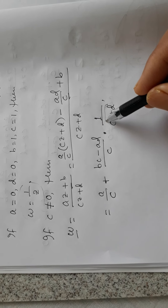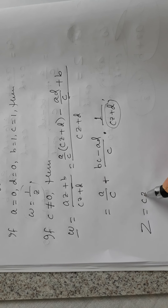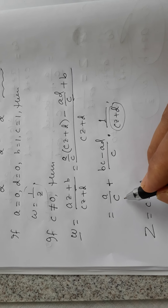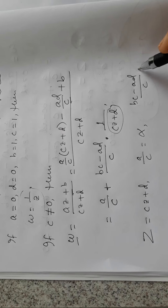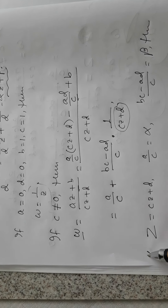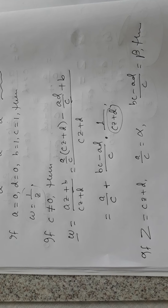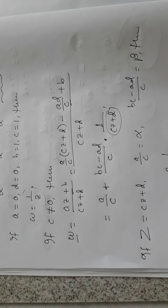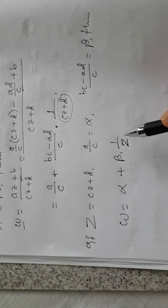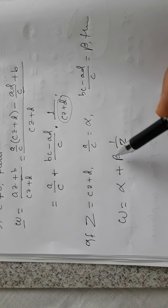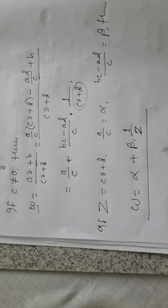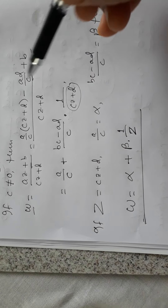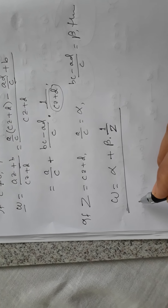Setting Z = cz + d, alpha = a/c, and beta = (bc - ad)/c, then w becomes alpha + beta * (1/Z). Therefore w is a combination of expansion/contraction, rotation, translation, and inversion — a combination that includes all the other elementary transformations.